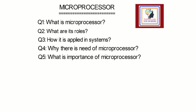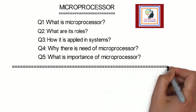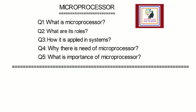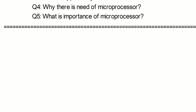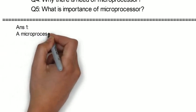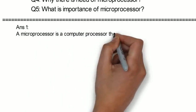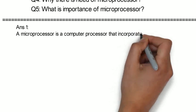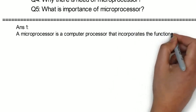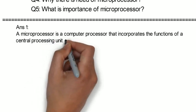Now we will study these questions in detail. So first question is, what is microprocessor? A microprocessor is a computer processor that incorporates the functions of a central processing unit on a single integrated circuit.